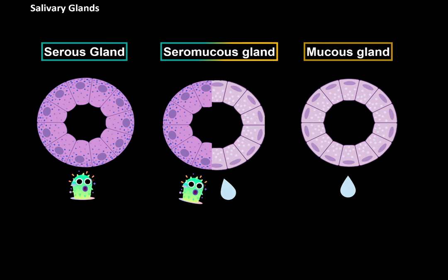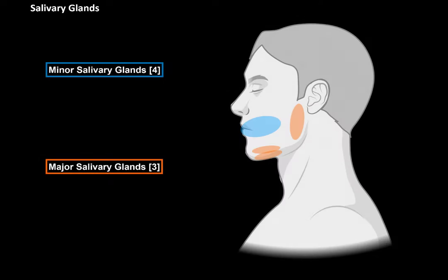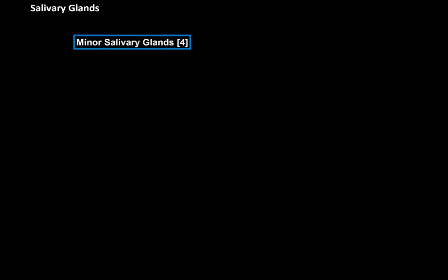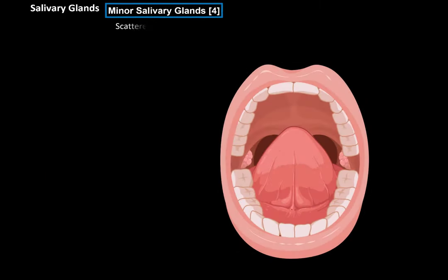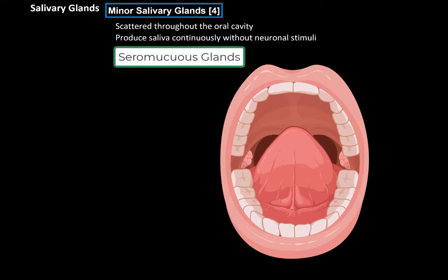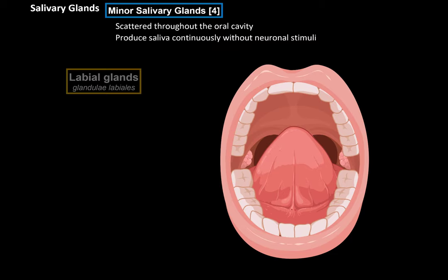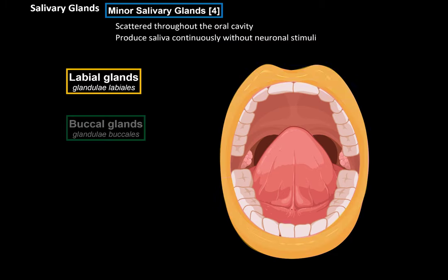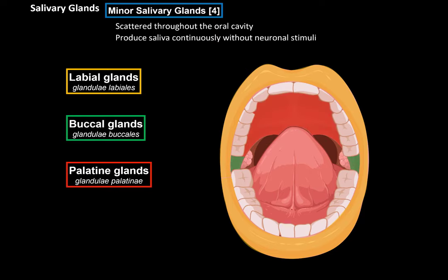Now that we have a general knowledge of the different glands, let's start with the minor salivary glands. The minor salivary glands are scattered throughout the oral cavity, and they produce saliva continuously without any neuronal stimulation. The majority of those glands are seromucus glands. There are the minor salivary glands in the lips called labial glands, the glands in the buccal region called the buccal glands, the palatine glands, and the lingual glands. These are the main minor salivary glands in the oral cavity.